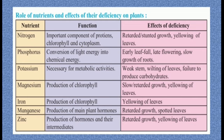Next is magnesium — its function is production of chlorophyll. Deficiency effects: slow growth and yellowing of leaves. Next is iron — it helps for the production of chlorophyll. Deficiency effect: yellowing of leaves. Next is manganese — it helps for the production of main plant hormones. Deficiency effects: retarded growth and spotted leaves. Next is zinc — its function is production of hormones and their intermediates. Deficiency effects: retarded growth and yellowing of leaves.